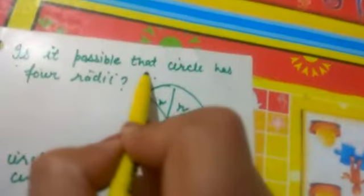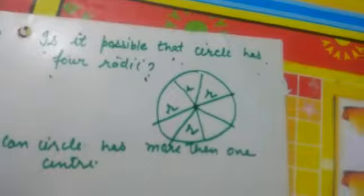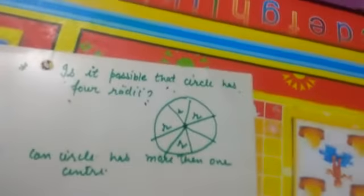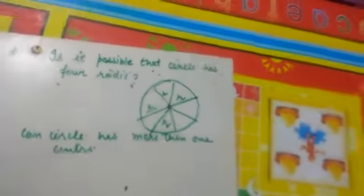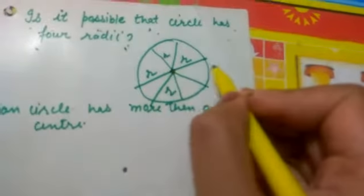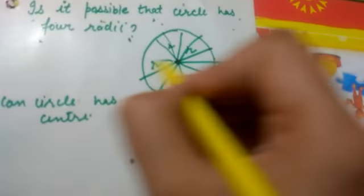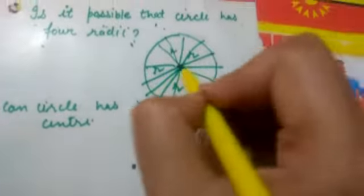Yes, it is possible that a circle has 4 radii. In fact, a circle can have 10 radii, 12 radii, 30 radii — many radii are possible. Because the radius is simply the distance between the center point and a boundary point, you can join many lines. A circle can have 10, 20, even 100 radii.